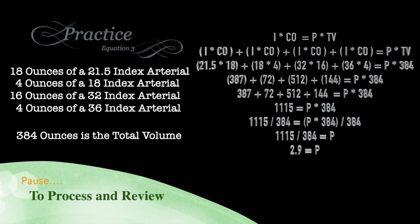So in this case, again, we're writing out our first chemicals index, which is 21.5, and multiplying that by the volume in that bottle, which we used 18 ounces of. And we're adding that to our second chemical, 18 index arterial, multiplying that by 4 ounces.